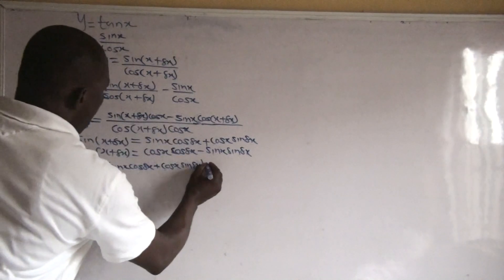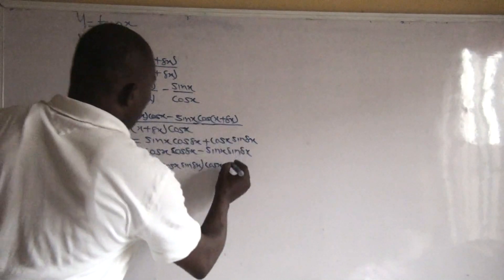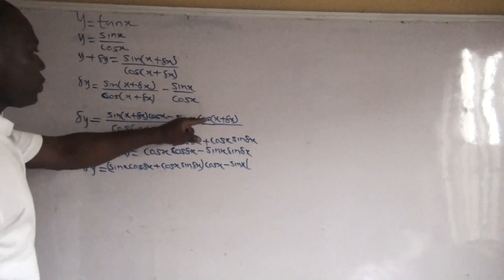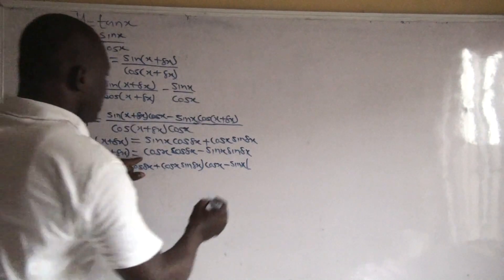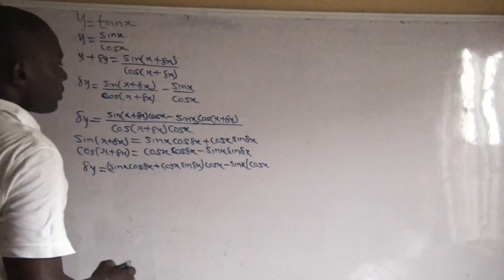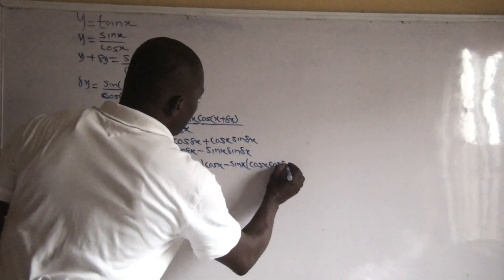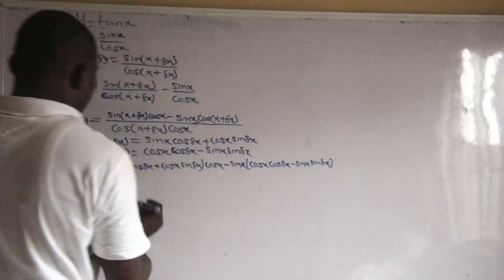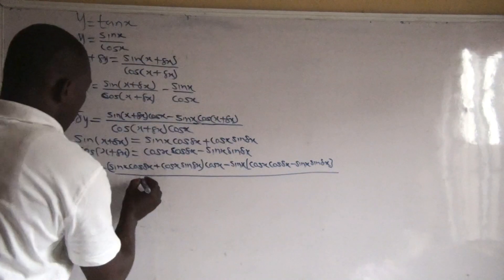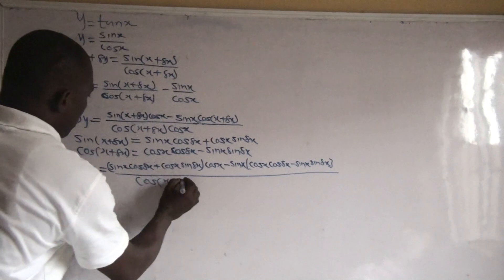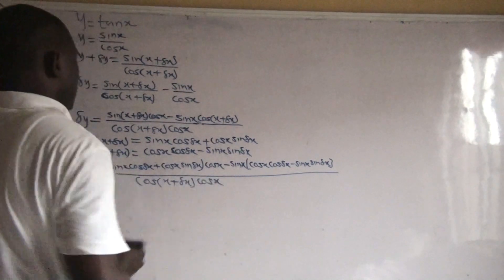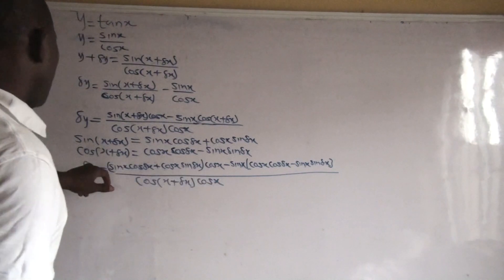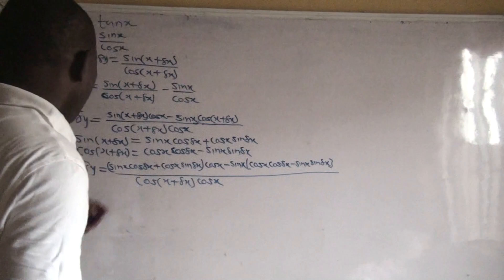That expression is in brackets, times cos x. Then minus sin x times cos(x + Δx), where we replace cos(x + Δx) with cos x·cos(Δx) − sin x·sin(Δx), all divided by cos(x + Δx)·cos x.